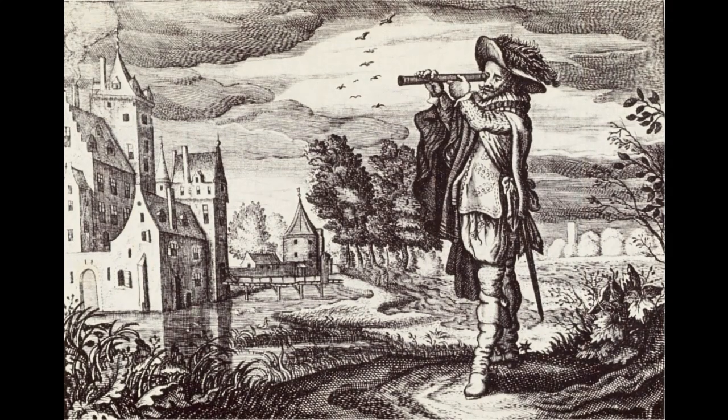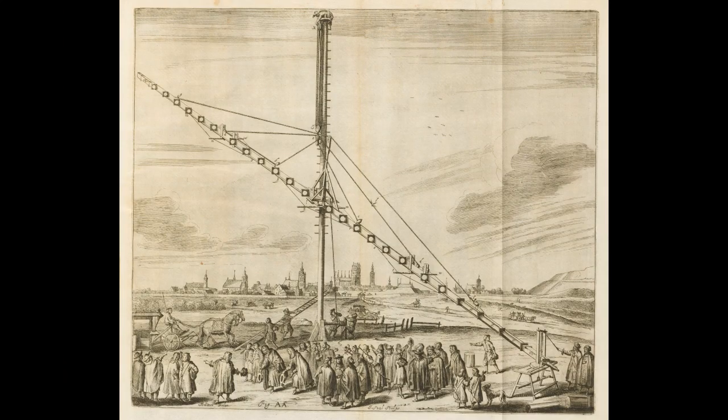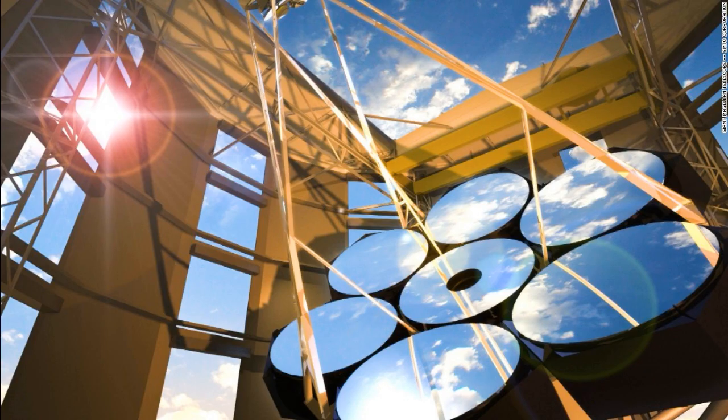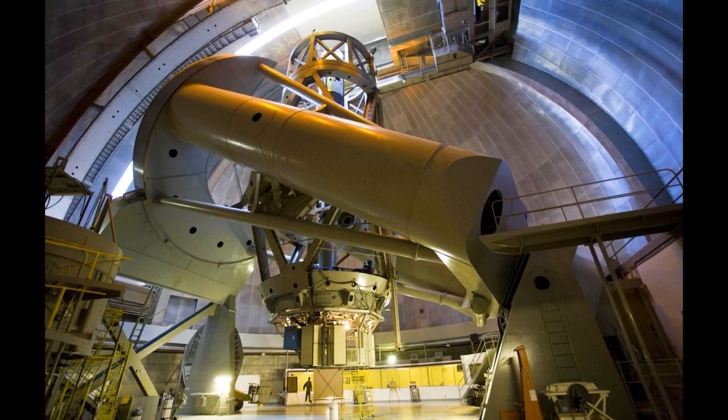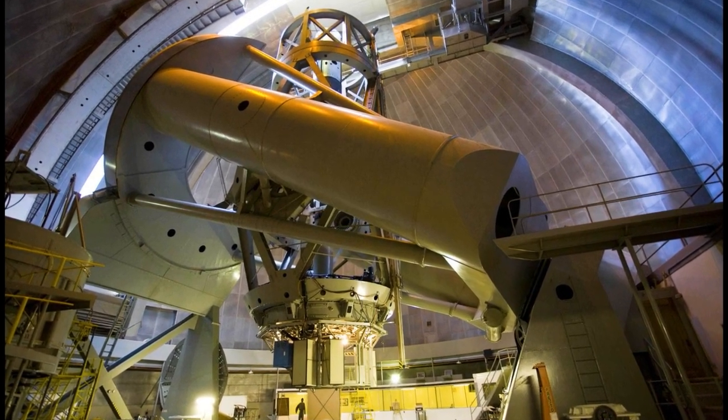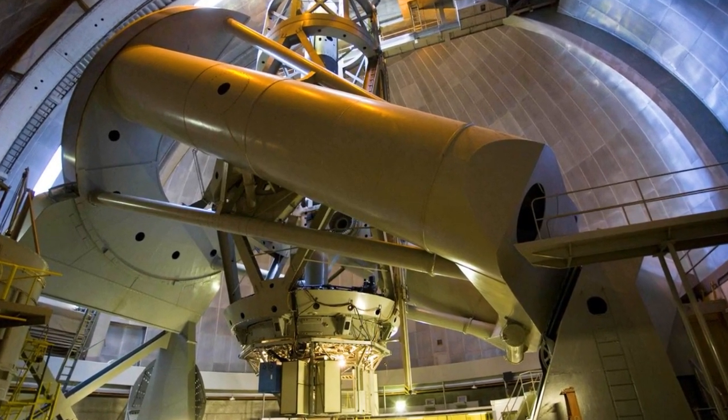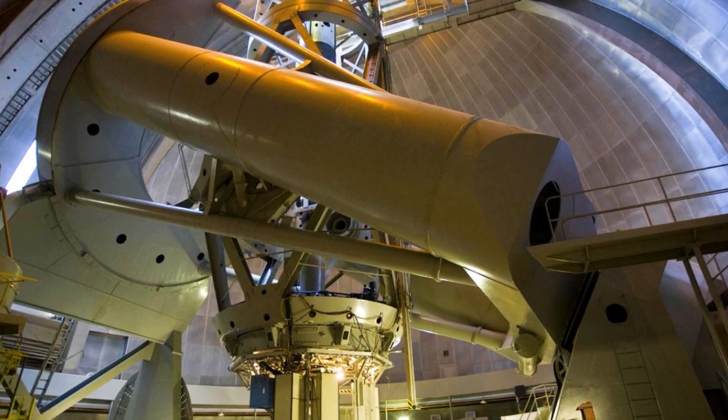Invented sometime in the late 1500s, optical telescopes have steadily improved over the centuries. From exoplanets to black holes, today's instruments have unlocked the secrets of the universe in ways that would have been unimaginable to those who first noticed that lenses can make distant objects appear as they are near. Let's take a closer look at how they actually work.